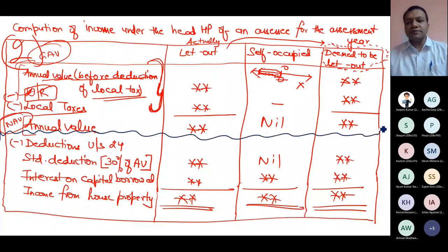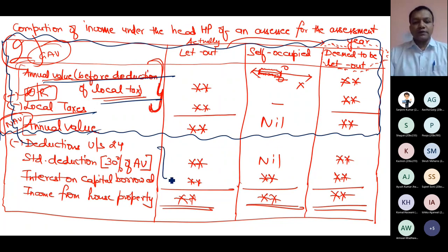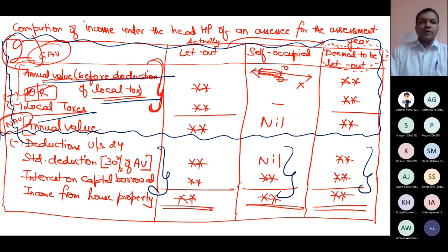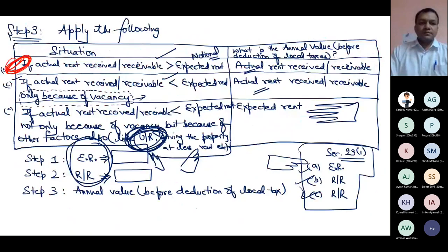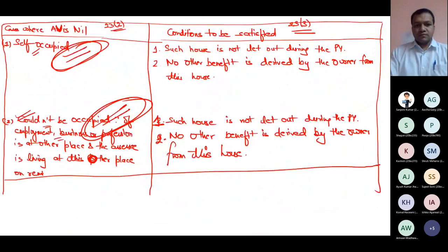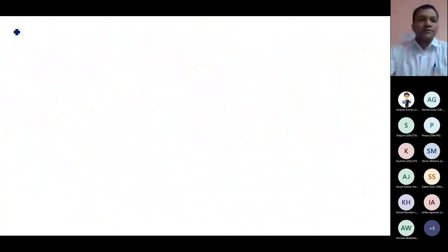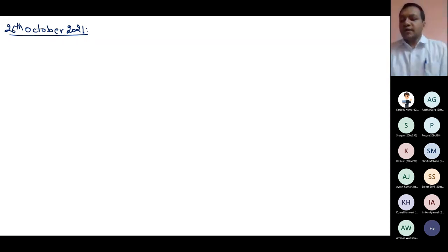We have discussed only up to annual value — annual value before deduction of local taxes, local taxes, and annual value. Now we will discuss the two remaining points: deductions under Section 24. Today is 6th October 2021. We are continuing the topic of house property and the point to be discussed is deductions under Section 24.